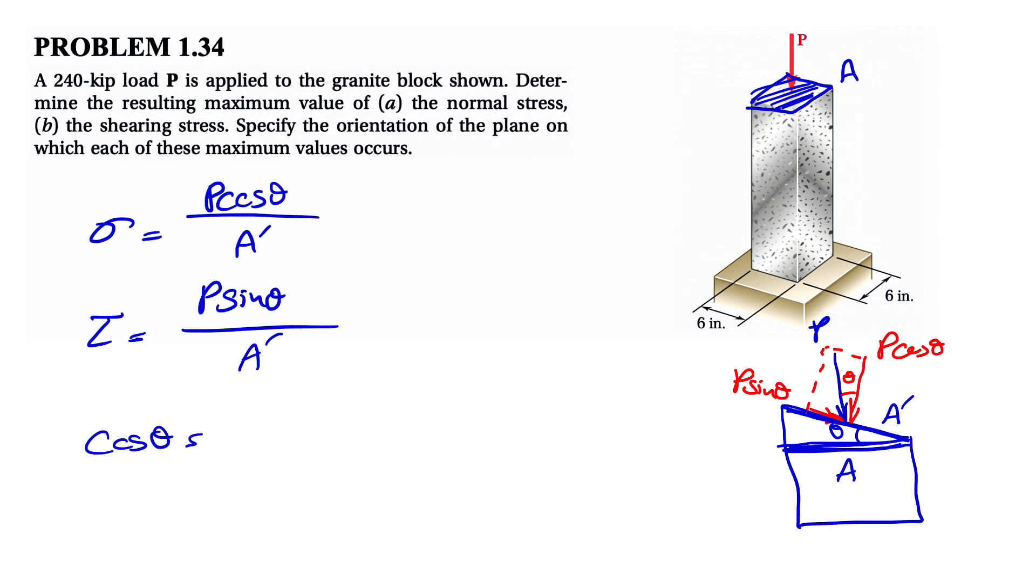If we want to find the relationship between A and A prime, we do the cosine of theta in this right triangle that we have. For cosine of theta, we have adjacent which is A over hypotenuse A prime. So A prime here would be A over cosine of theta.